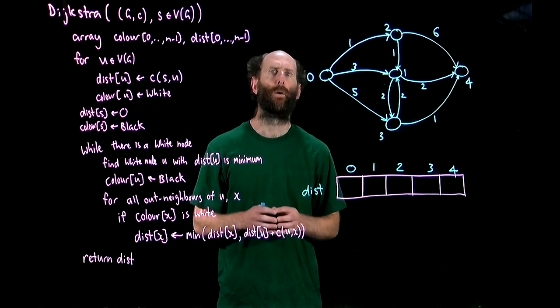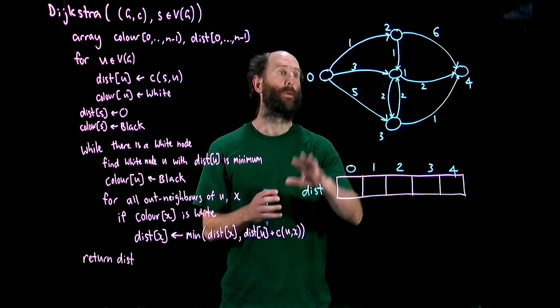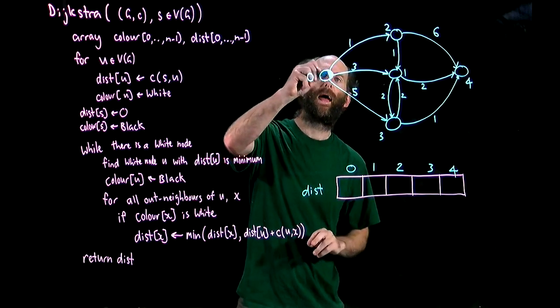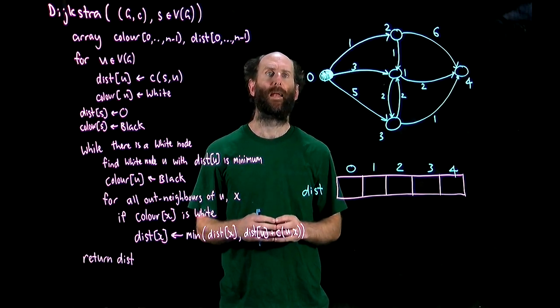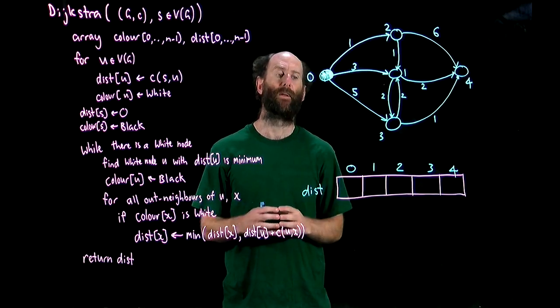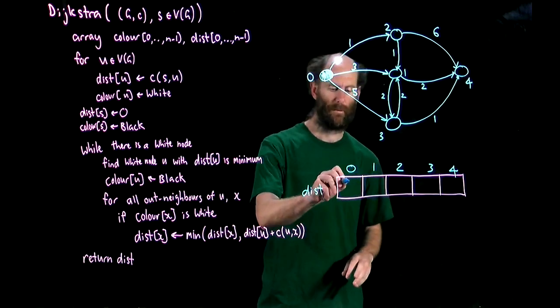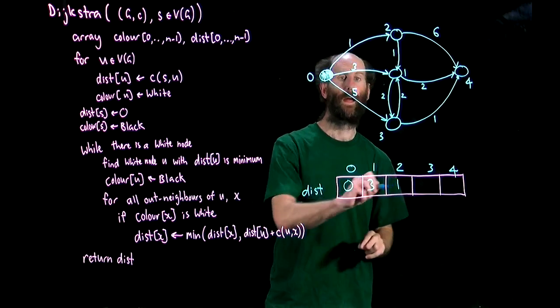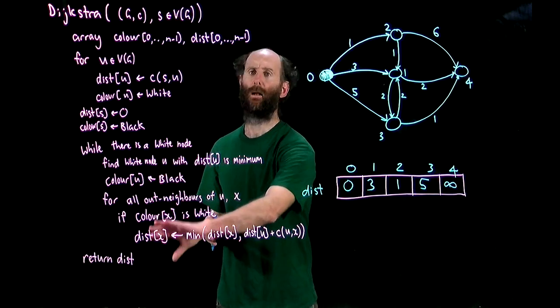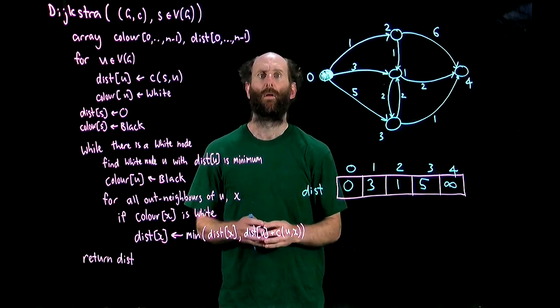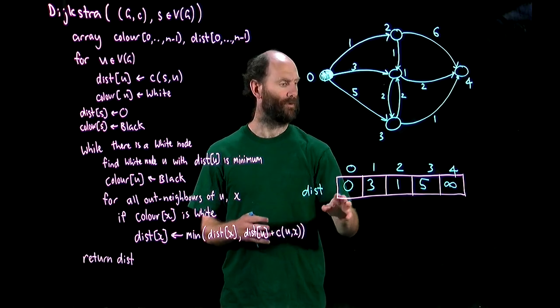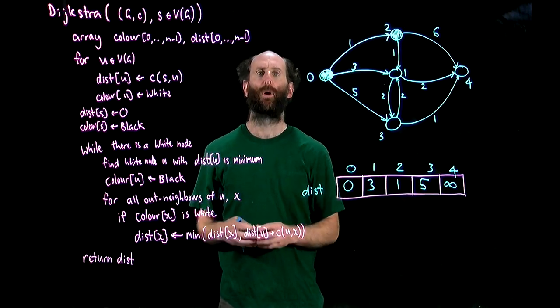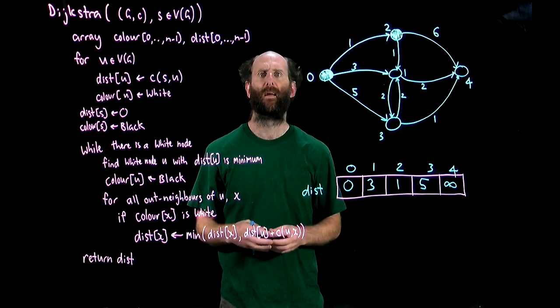We'll run Dijkstra on this digraph with source node zero. So we start with all nodes colored white but the color of the source node is black and we initialize the distance array to be the weight of any arc that exists from zero otherwise it's infinite. So the distance to zero is zero, the distance to one is three, the distance to two is one and so on. So now we're at the start of this while loop. There are still white nodes so we look for the node with the lowest dist which is two with a dist of one. We'll color two black and now we'll go through each of the out neighbors updating its distance if possible.